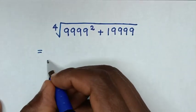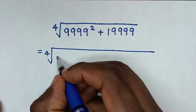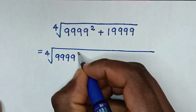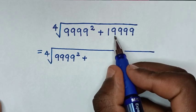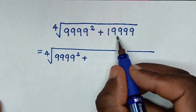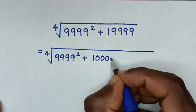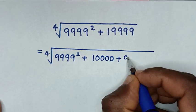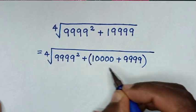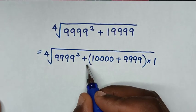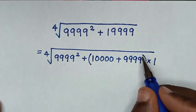It will be equal to the 4th root of 9999 squared, plus 19999 rewritten as 10,000 plus 9,999. We multiply by 1 so as to make this part in the form of a perfect square.